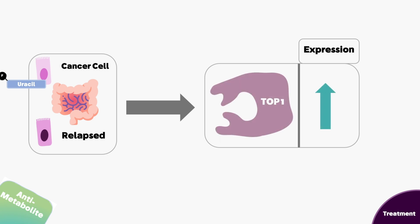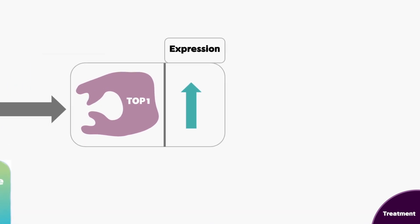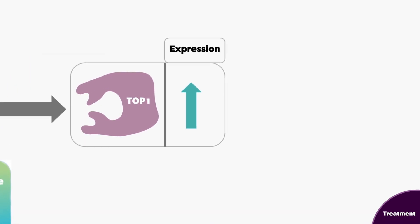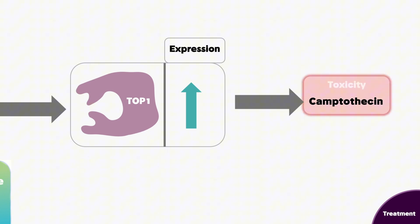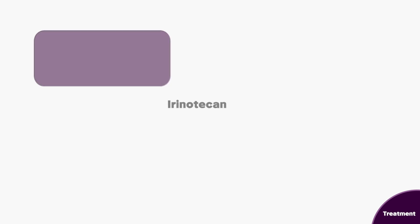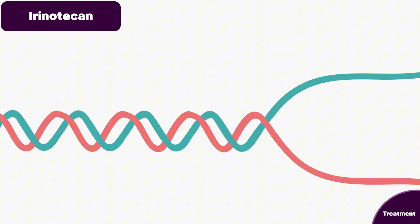If this tumor was treated with 5-fluorouracil — a type of anti-metabolite — and then relapsed, studies showed that the relapsed cancer cells displayed an increased level of topoisomerase 1 expression. Studies subsequently suggested the use of a topo 1 inhibitor such as camptothecin; however, camptothecin showed a high level of toxicity, so derivatives of this drug were tested.